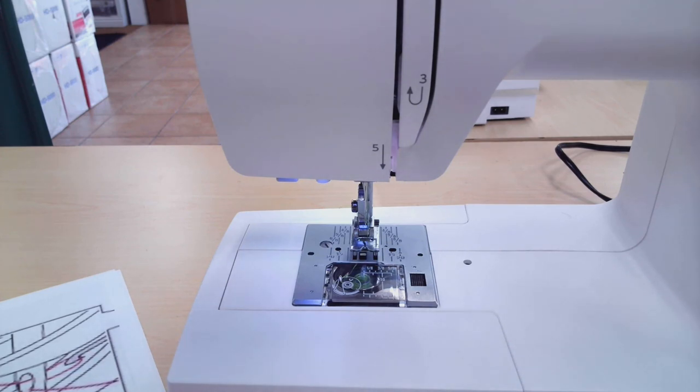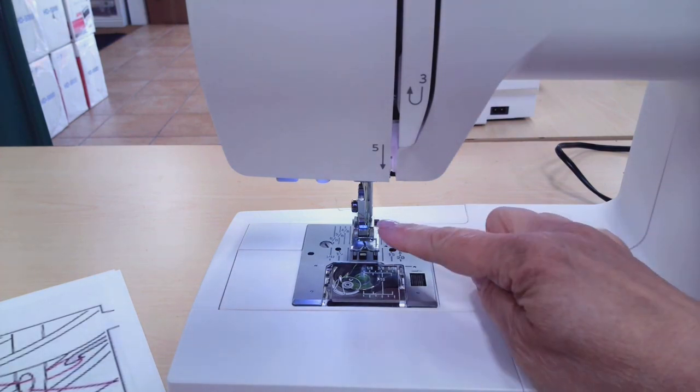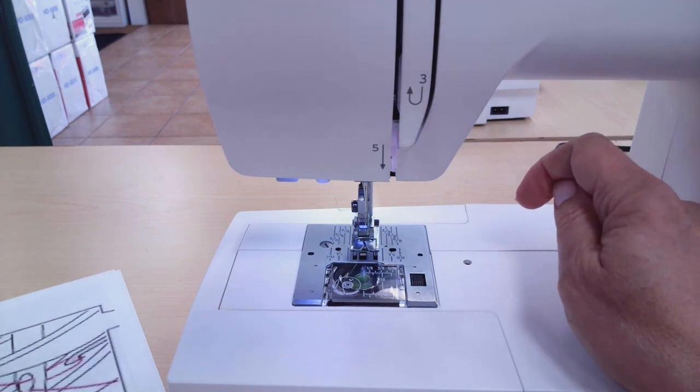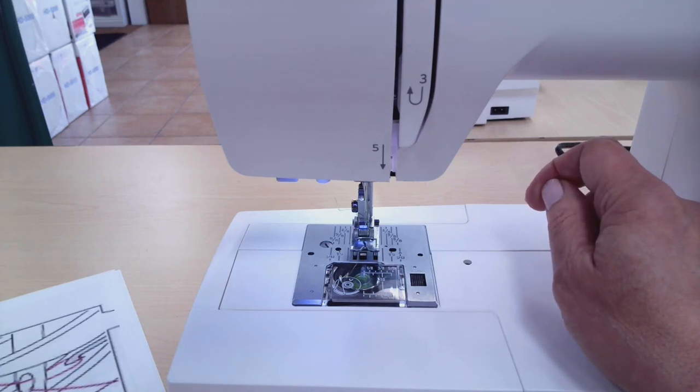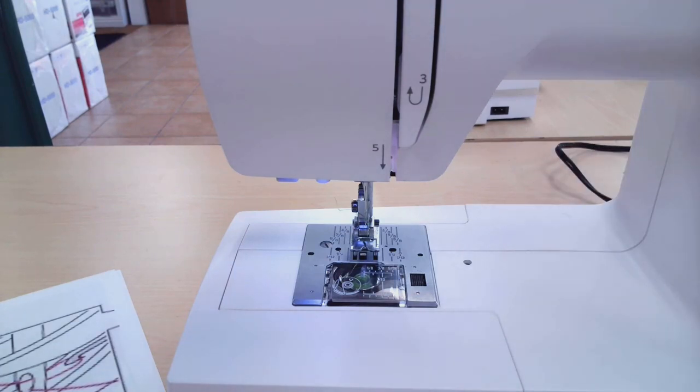The other thing that's really important to remember is the size of our needle. So your needle threader will work on sizes from 75/11 and up. So if you're working with a small needle like a 70/10 or even as small as a 65/9, these needles are too small, the eye of the needle is too small for the hook to go through and the thread.